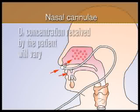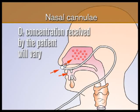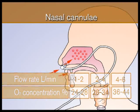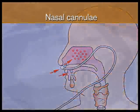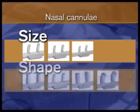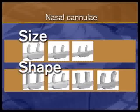The concentration of oxygen received by the patient will vary as previously mentioned. However, oxygen flows of 1 to 6 litres per minute will deliver up to 44% of oxygen to most adult patients. There are various sizes available for adults, paediatrics and neonates, and a variety of prong shapes are also available to suit varying circumstances.